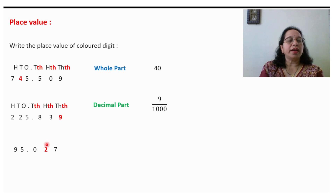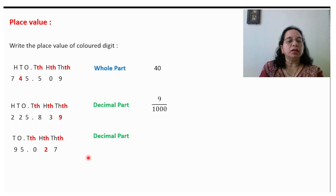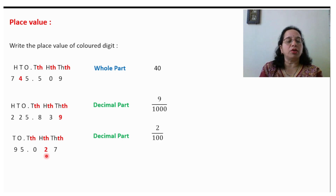Again write down the places. 2 is in the decimal part — 2 is in the hundredths place. This means 100 will come in the denominator. So the place value of this 2 will be 2 upon 100.